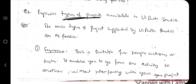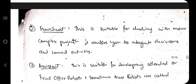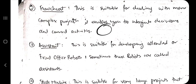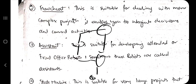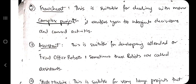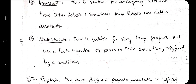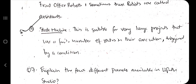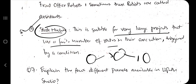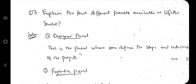The next very important question is: explain the types of projects. There are four types. Sequence: used when you have a sequential series of steps to follow one after another. Flowchart: used for complex projects involving conditions and branching. Assistant: helps in developing attended or unattended front-office robots. State Machine: used for very large projects that use a finite number of states — suitable when using automata-based logic.